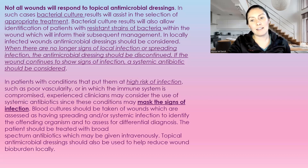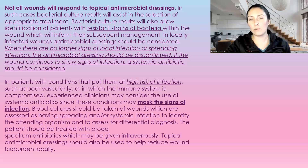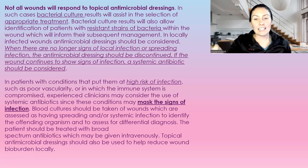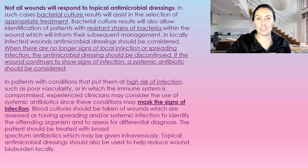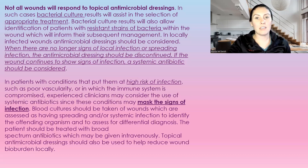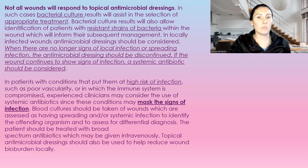If the wound continues to have signs and symptoms of infection, a systemic antibiotic should be considered. Patients with conditions putting them at higher risk — such as poor vascularity or compromised immune systems — may be placed on an oral antibiotic, as these conditions can mask signs of infection. Blood cultures should be taken for wounds assessed to have spreading or systemic infection so we know what we're dealing with. A lot of times this is treated with an IV broad spectrum antibiotic, and topical antimicrobials should also be used to help reduce local bioburden.